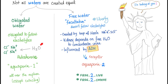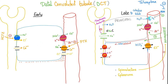Aldosterone reabsorbs obligated water. Antidiuretic hormone works on the late distal and collecting tubules in the kidney — this is for pure free water. But obligated water is being reabsorbed all over the nephron, including the distal and collecting tubules, under the influence of aldosterone.